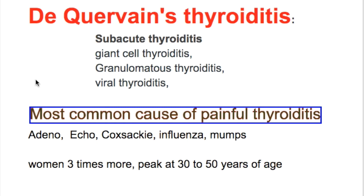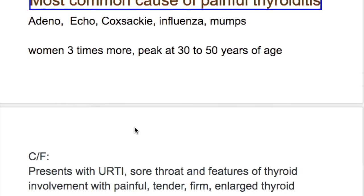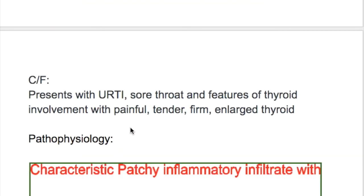Which viruses are implicated in causing De Quervain's thyroiditis? Adenovirus, ECHO, Coxsackie, influenza, and mumps virus. The condition is three times more common in women, with a peak incidence at 30 to 40 years of age.